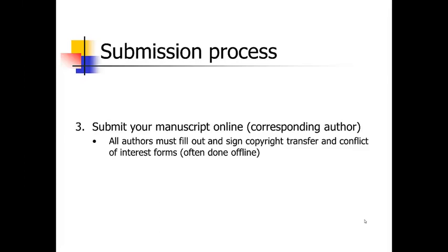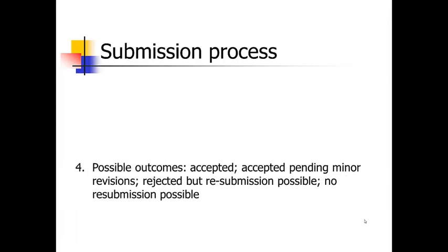After you've submitted your manuscript, within anywhere from a week to two months, you'll get a letter back from the editor. There are generally four categories your paper will be put in. You might get the paper accepted outright with no changes — but that hardly ever happens and is usually only when an editor solicited the paper. There's also accepted pending minor revisions, which also doesn't happen that often with original research manuscripts.